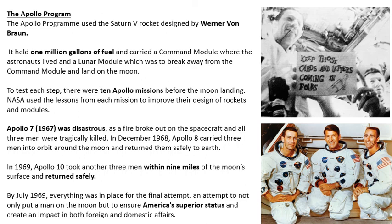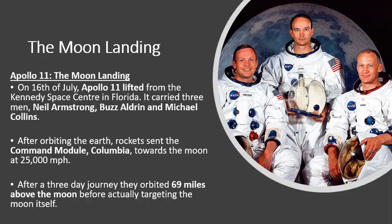By 1969 everything was in place for the final attempt — not only to put a man on the moon but to ensure America's superior status. America had now pulled quite ahead of Russia, who were not close to landing a man on the moon. Kennedy had promised a moon landing by the end of the decade, and it was July 1969, so they wanted to get a man on the moon before 1970 to fulfill that promise. On July 16th, Apollo 11 lifted off from the Kennedy Space Center in Florida, carrying Neil Armstrong, Buzz Aldrin, and Michael Collins.